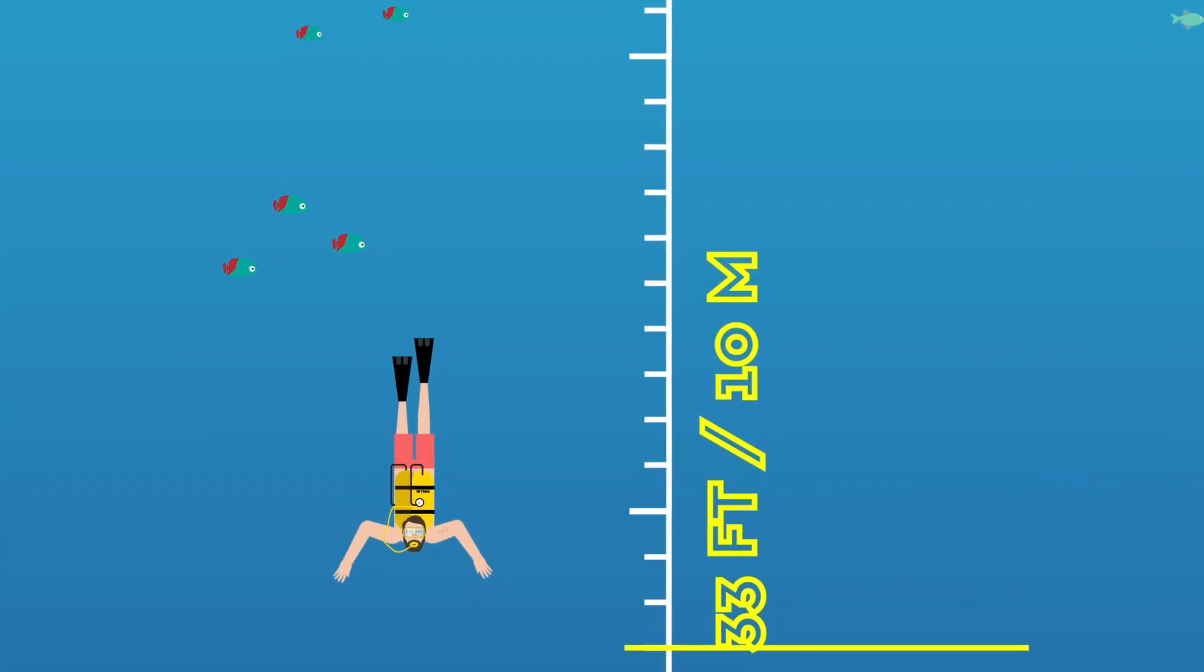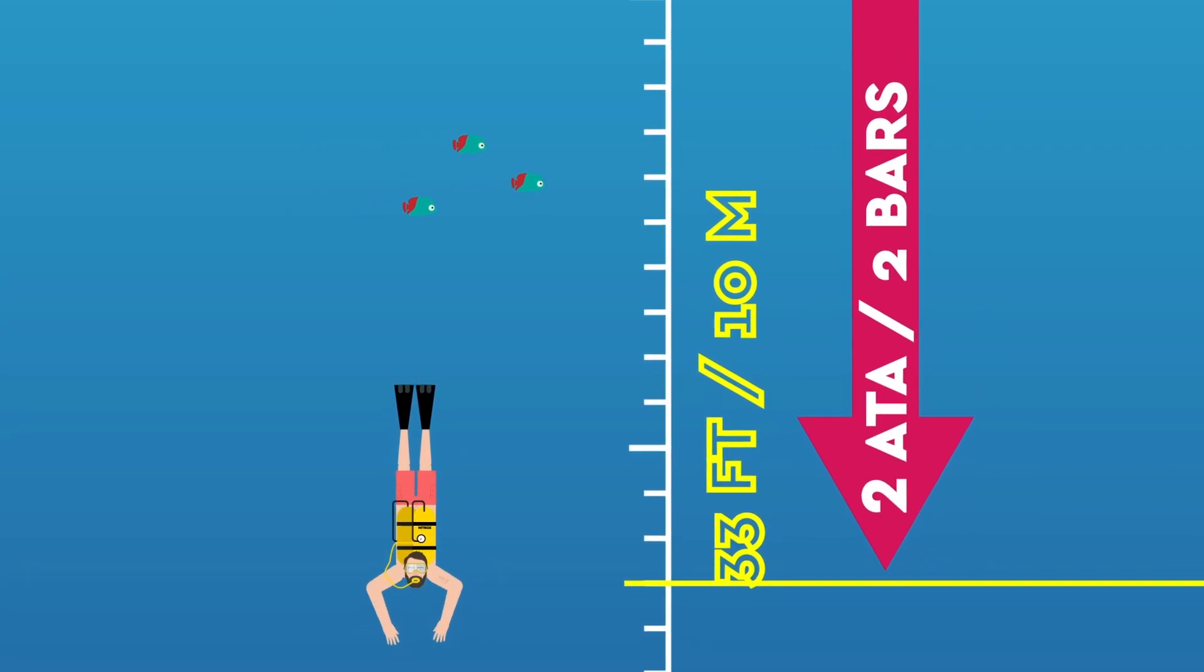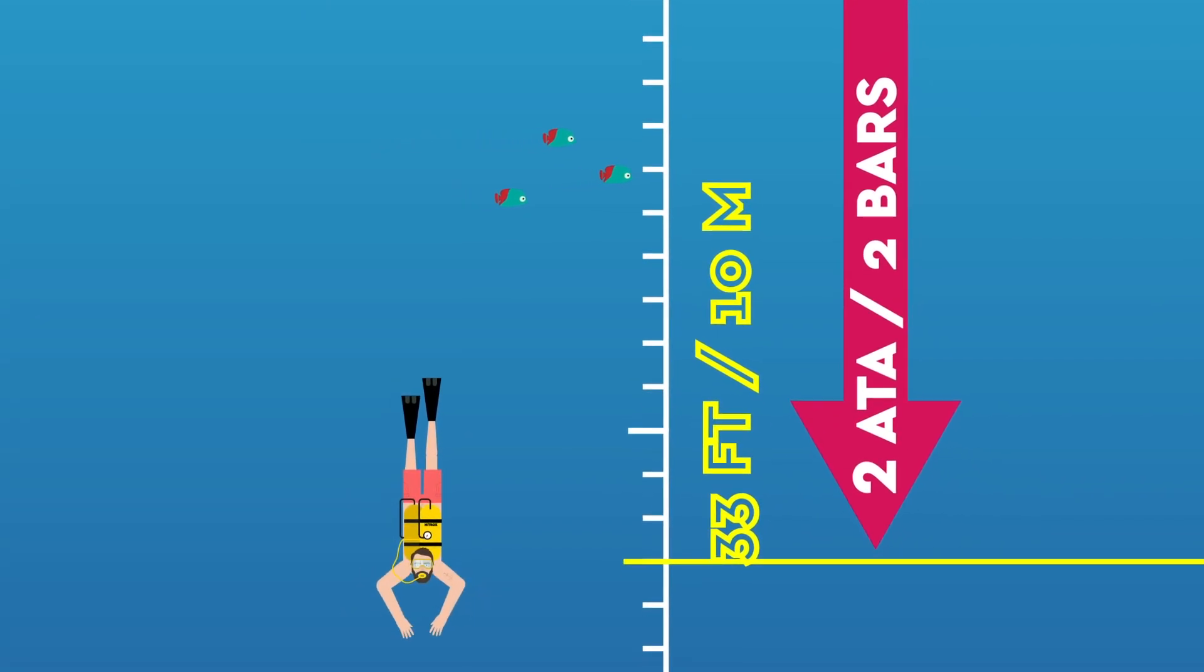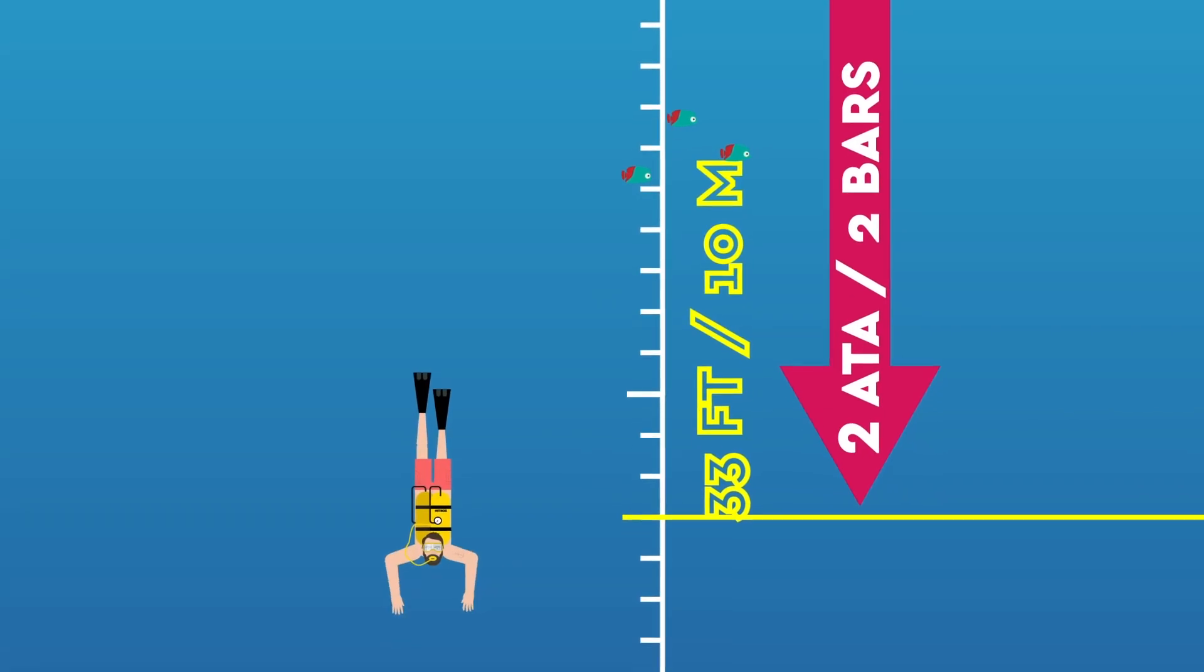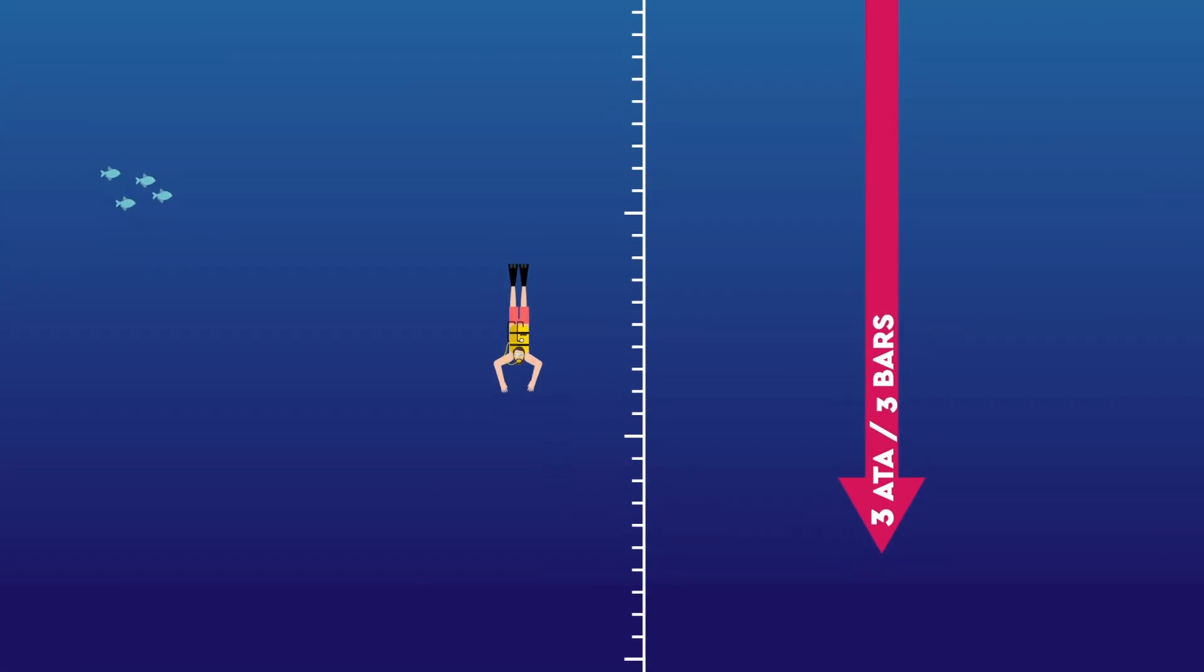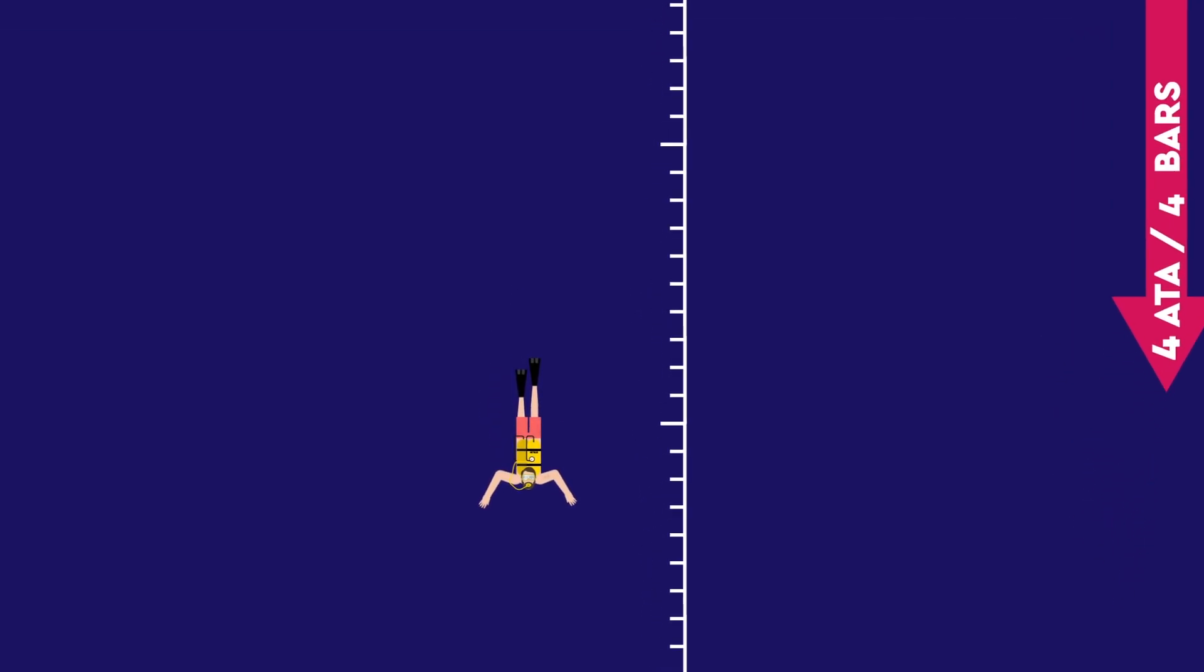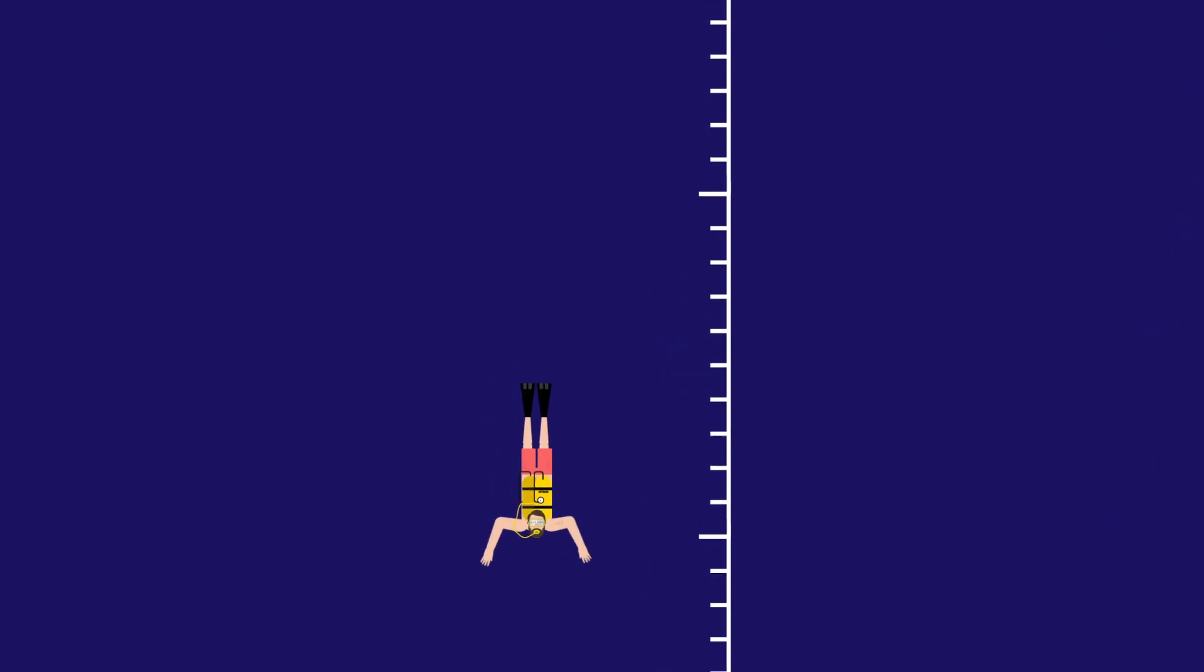But just 33 feet, 10 meters underwater, the pressure is two atmospheres. With only this one additional atmosphere of pressure, your lungs will collapse by half. And the pressure increases by one atmosphere for every additional 33 feet, 10 meters, you dive. This increased pressure can lead to several problems in the human body, which is not well adapted to underwater conditions, regardless of the gear you're wearing.